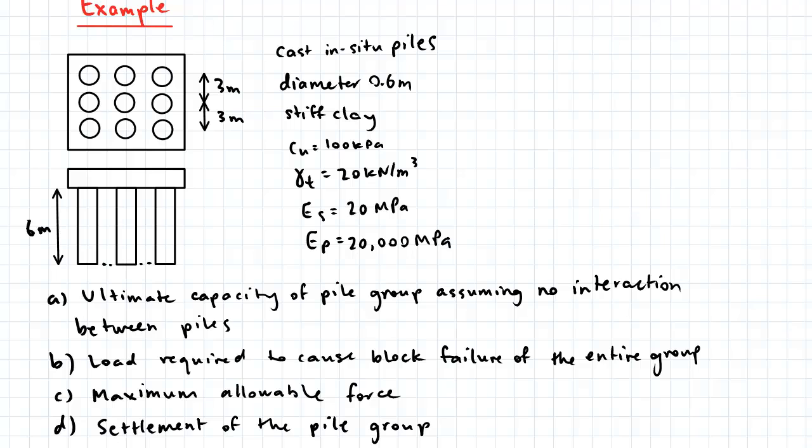We're interested in determining the ultimate capacity of the pile group assuming no interaction between piles, the load required to cause block failure of the entire group, and from the minimum of the two values found in part A and part B we can determine the maximum allowable force that can be applied to the pile group. Finally we need to also determine the settlement of the pile group.